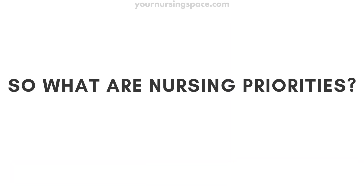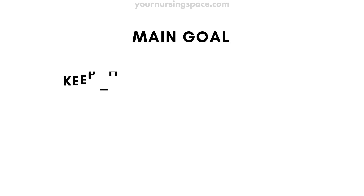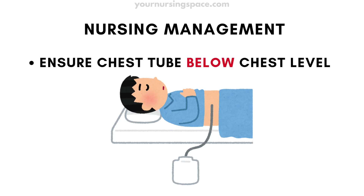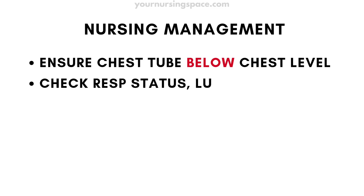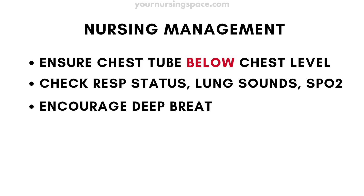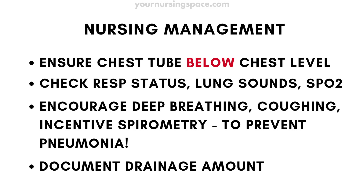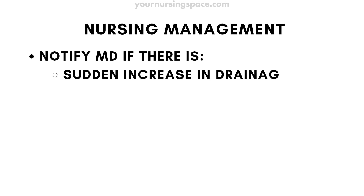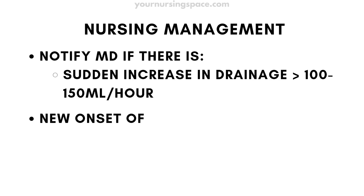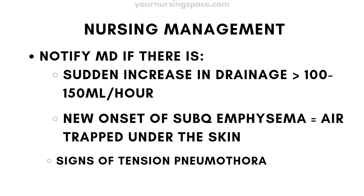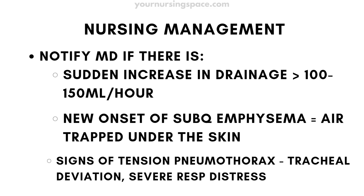Your nursing priorities while managing patients with chest tubes: keep the system functioning, prevent complications, and monitor your patient closely. Keep the chest tube drainage system below chest level at all times. Check respiratory status, lung sounds, and oxygen saturation regularly. Encourage deep breathing, coughing, and incentive spirometry to prevent pneumonia. Document drainage amount and characteristics every shift. Call the provider for sudden increase in drainage over 100 to 150 milliliters per hour, new onset subcutaneous emphysema, or signs of tension pneumothorax such as tracheal deviation, severe distress, or dropping oxygen levels.